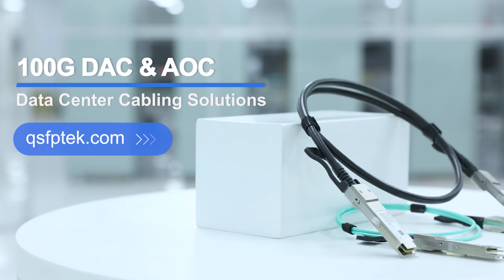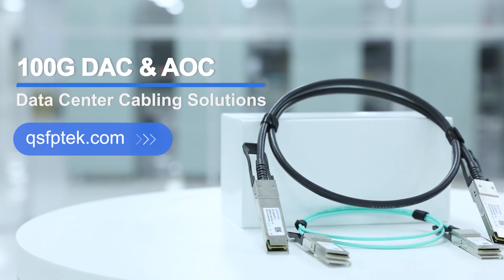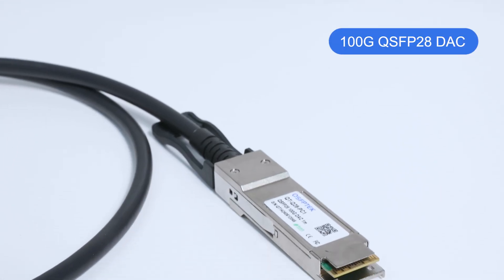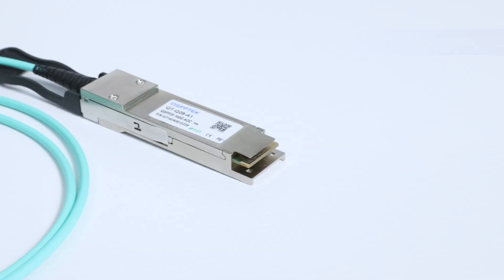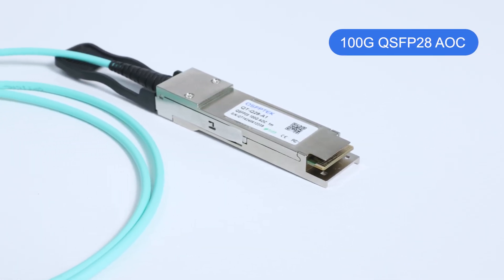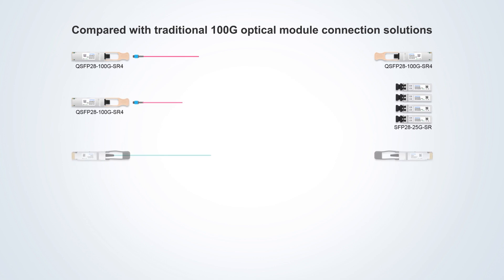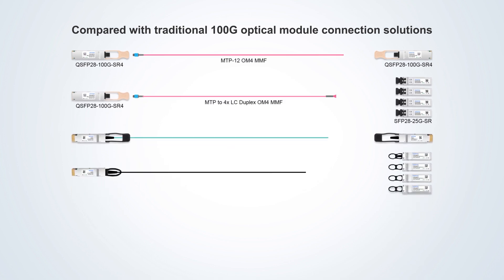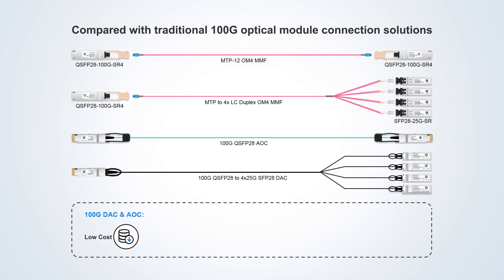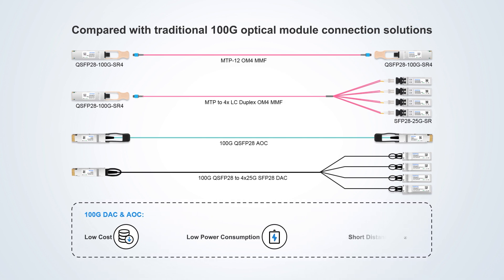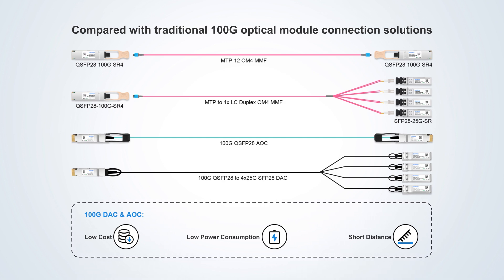100G QSFP28 cables are now key components in data centers and high-performance computing environments. They not only cover 100G QSFP28 DAC and 100G QSFP28 AOC, but also include various breakout cables to meet different network connection needs. Compared with traditional 100G optical module connection solutions, 100G DAC and AOC greatly save costs and achieve lower power consumption, becoming a cost-effective, high-speed data communication solution to replace 100G optical modules.